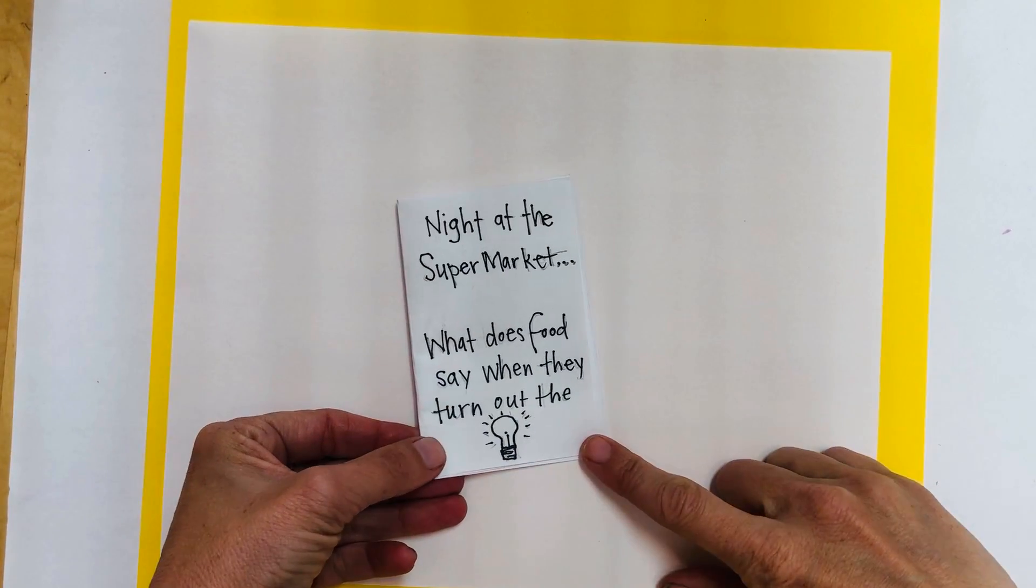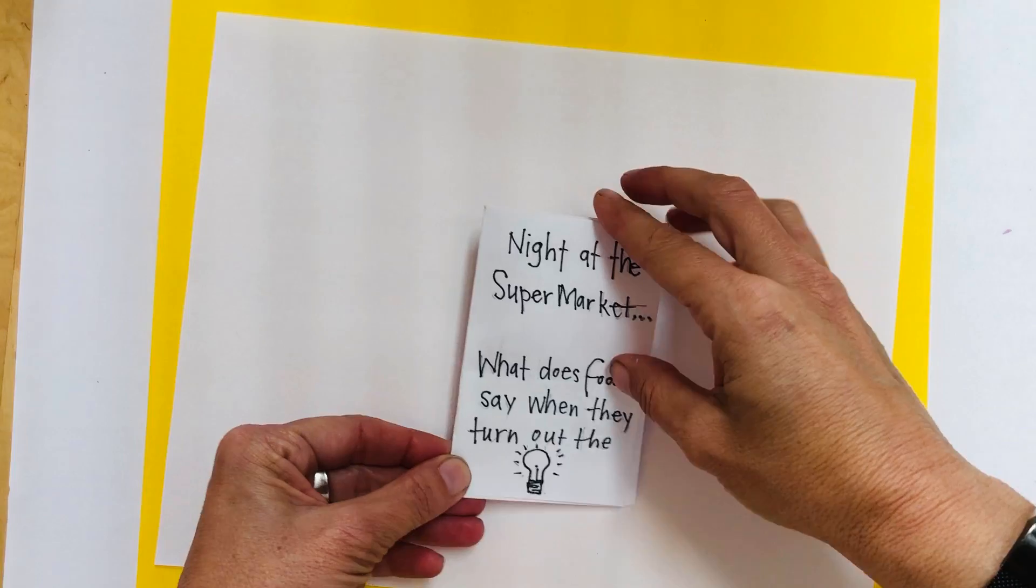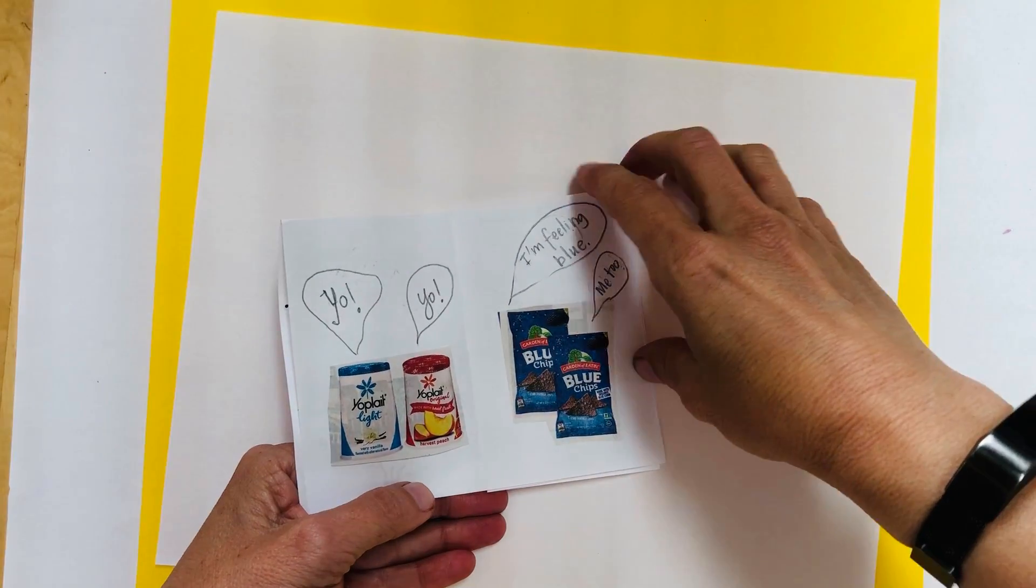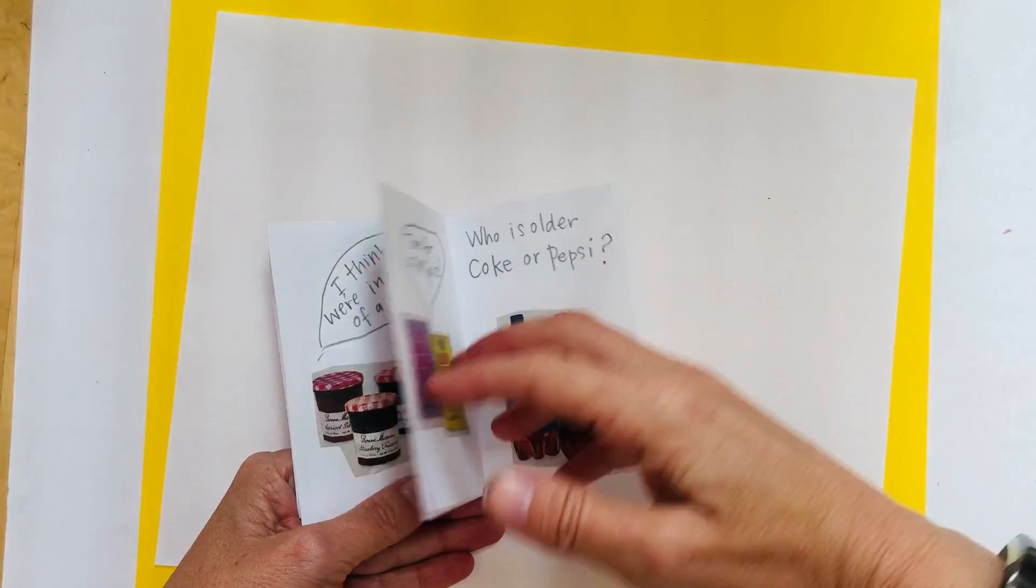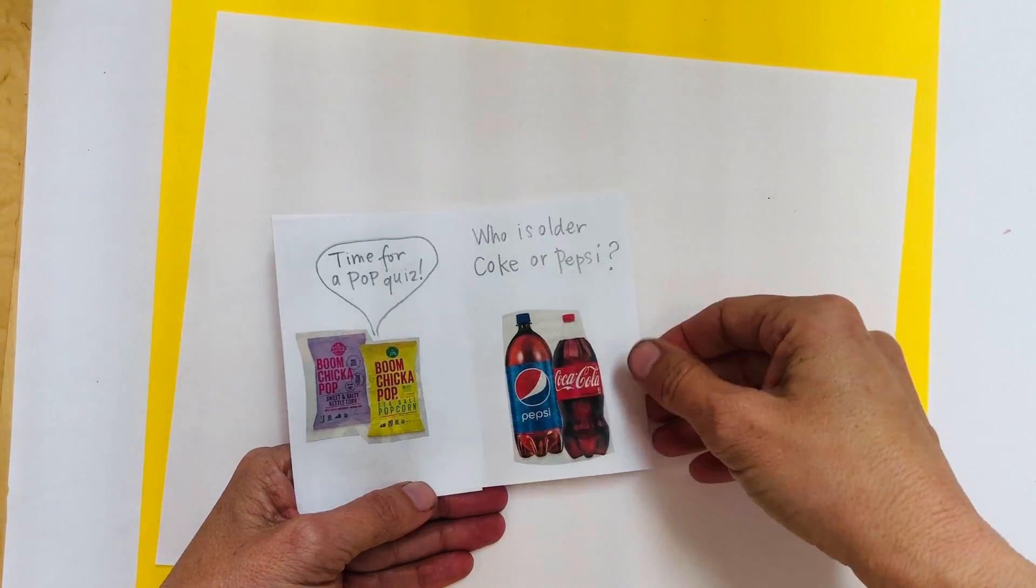We're going to make something called a zine today. This one is made from one page but it has multiple pages that you can add details to. You can either draw or you can collage like I did.